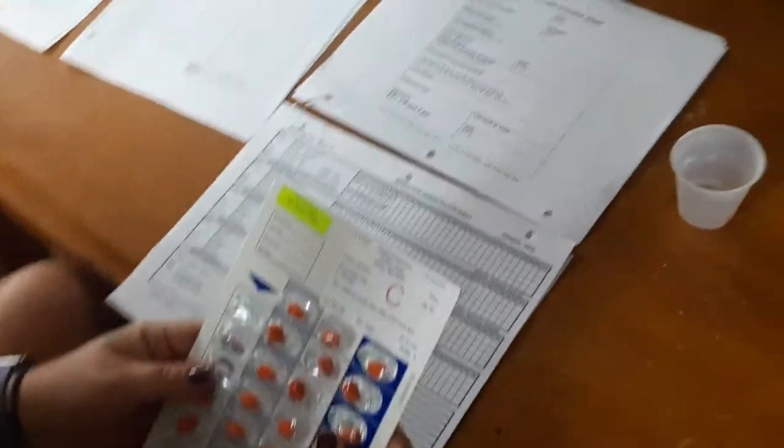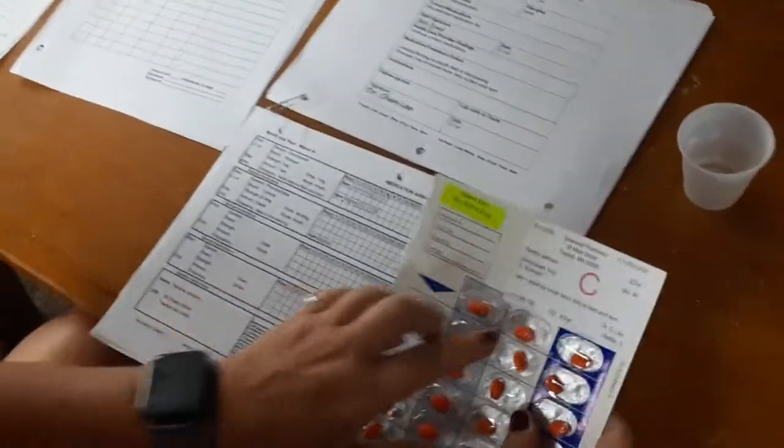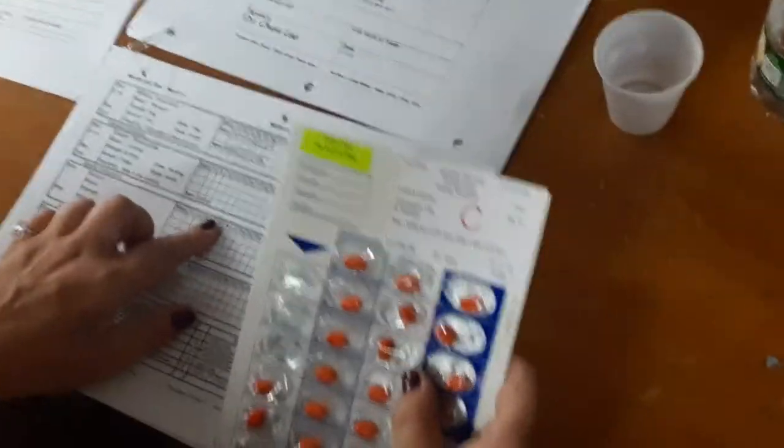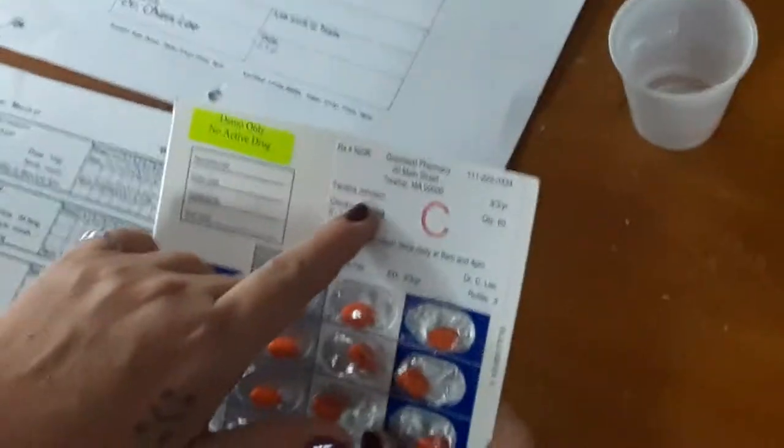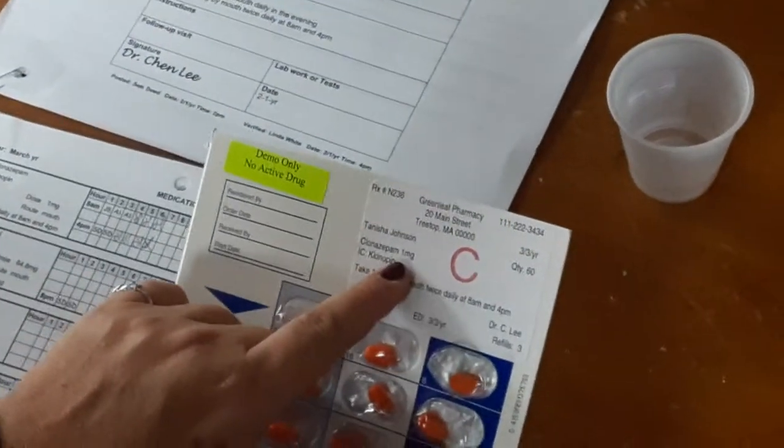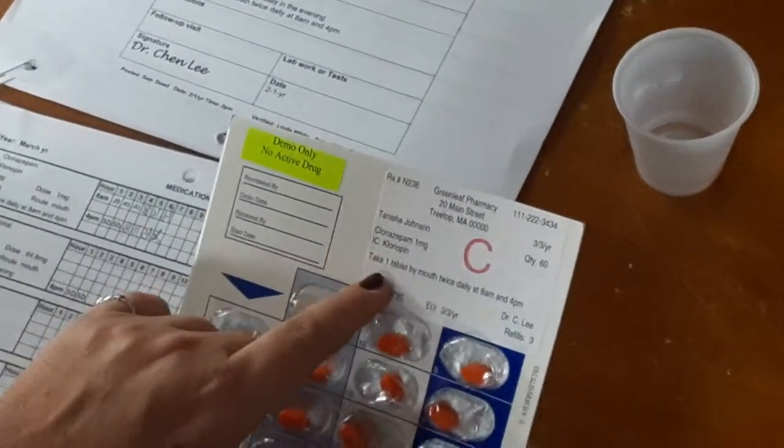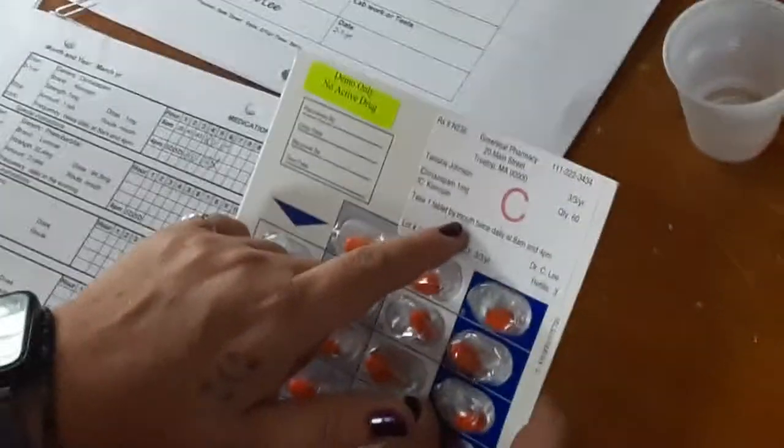Now I'm ready for my third check between the pharmacy label and the medication sheet. Tanisha Johnson, clonazepam, 1 milligram, I see Klonopin. Take 1 tablet by mouth, twice daily, at 8 a.m. and 4 p.m.